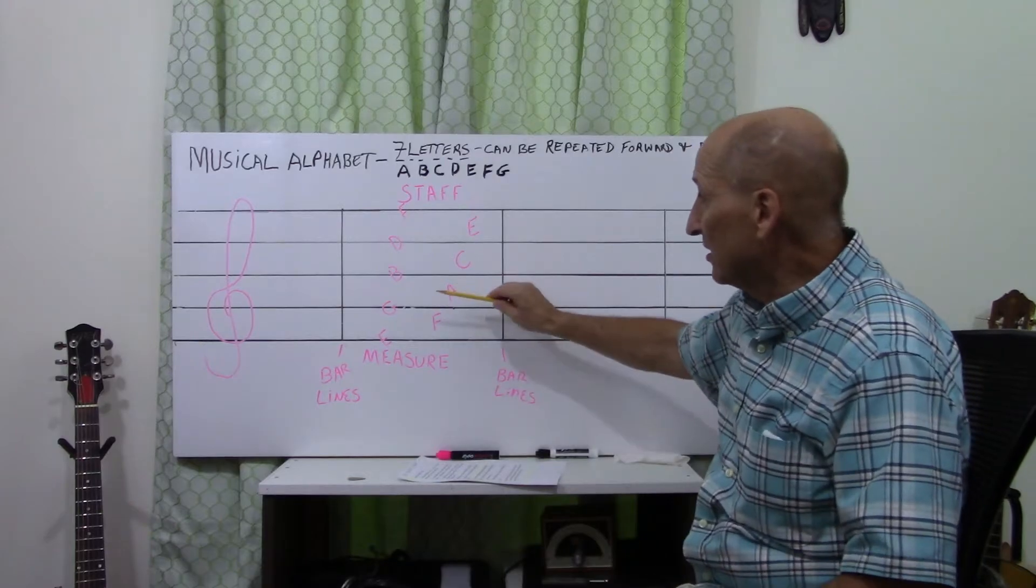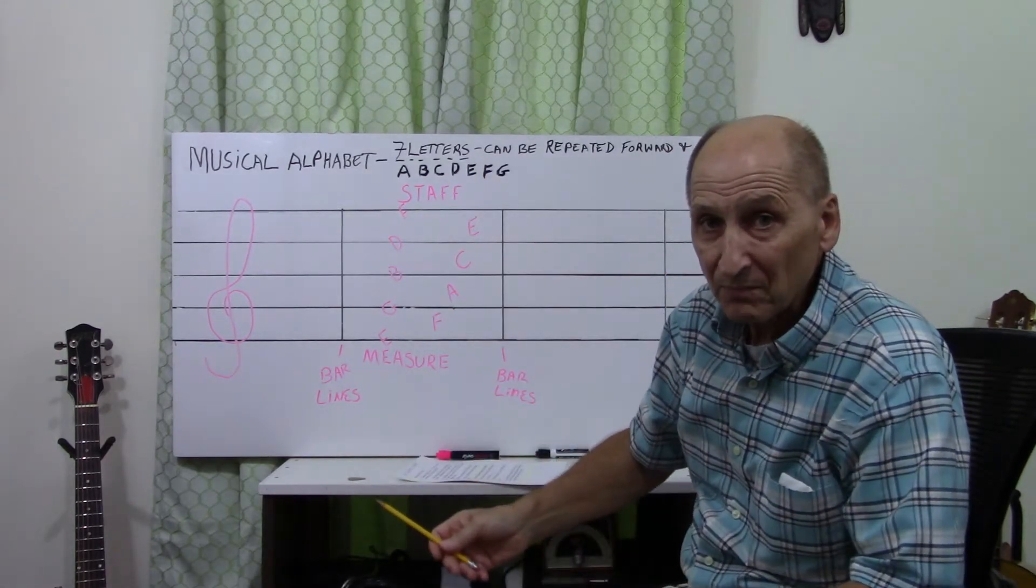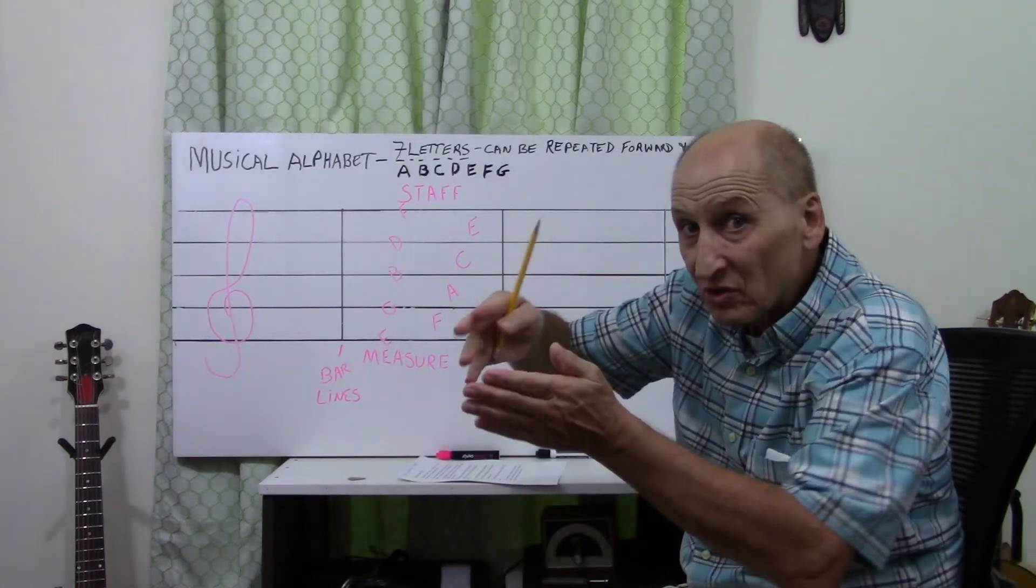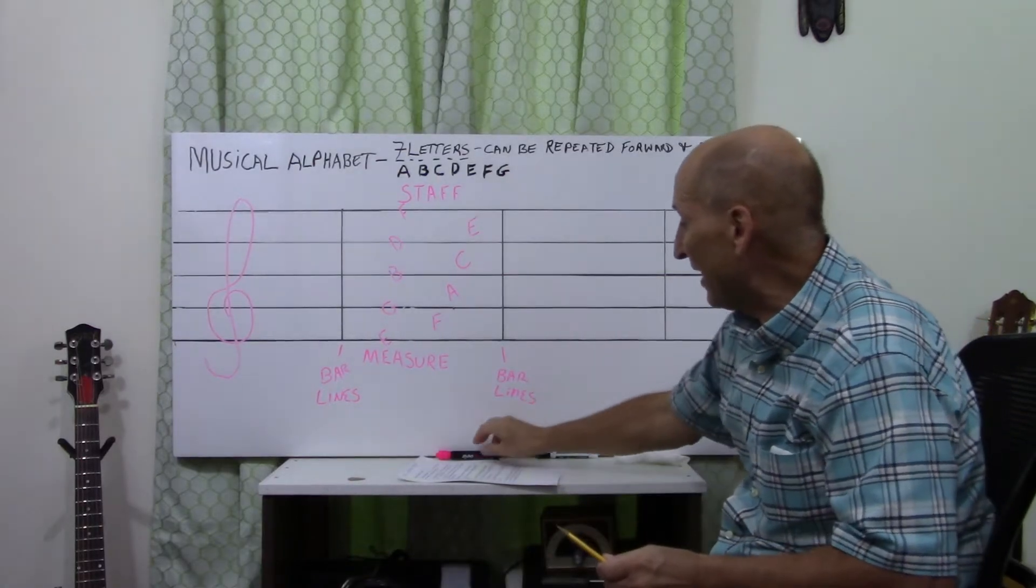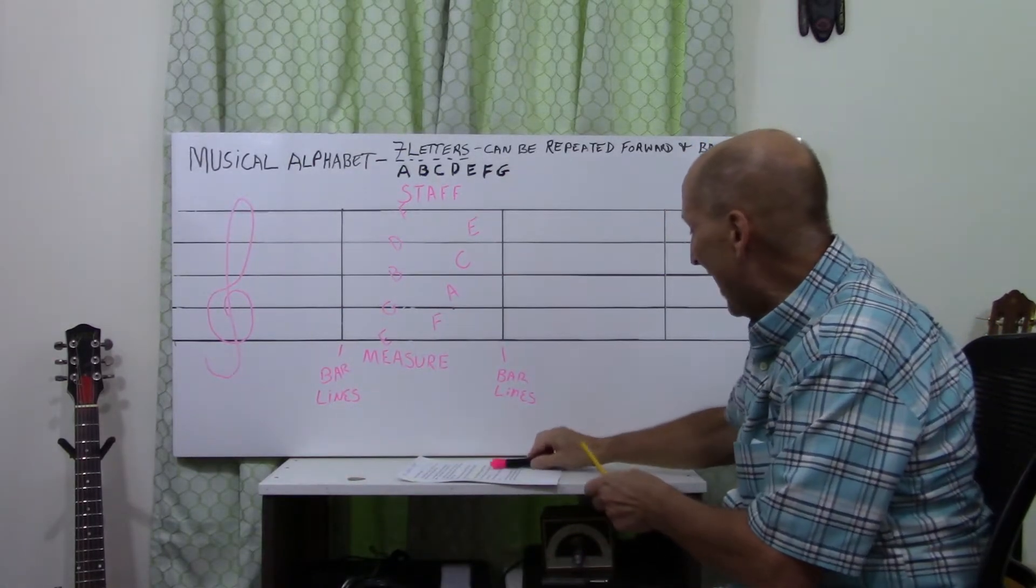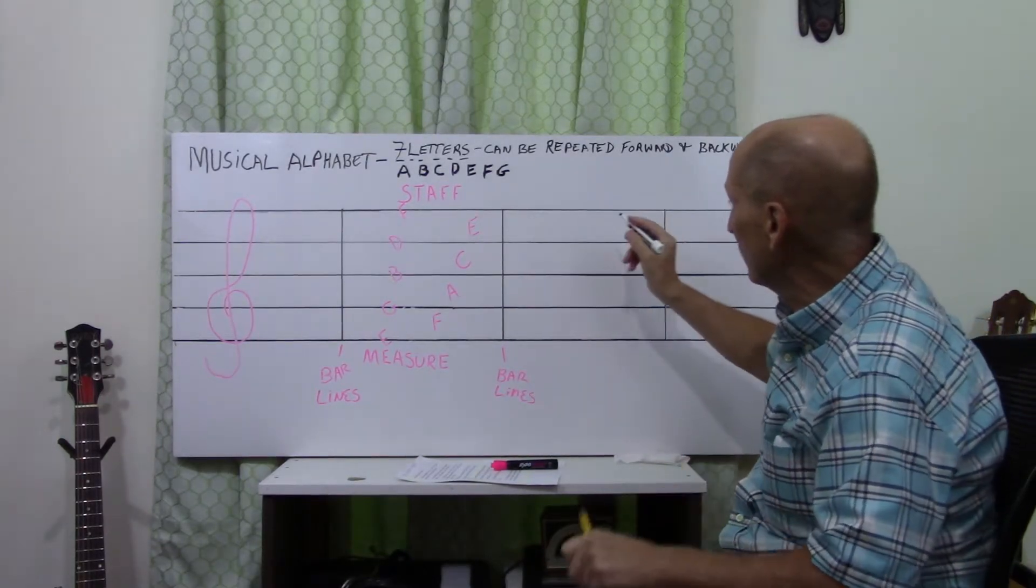Another thing. Sometimes, this wouldn't indicate for every note that's possibly played. Sometimes, we have to expand the staff. When we expand the staff, we're going to add lines and spaces.